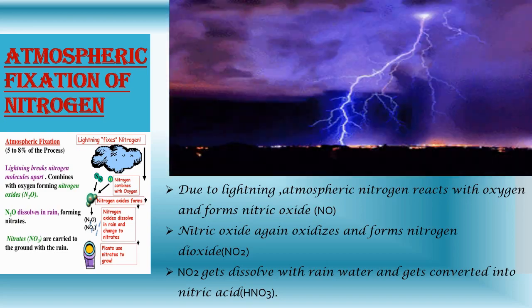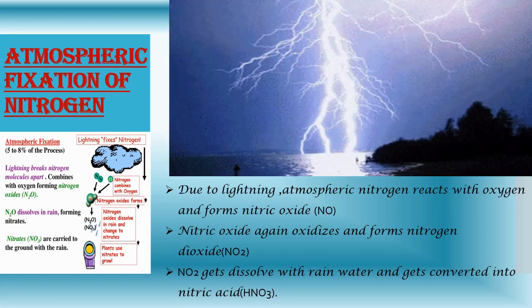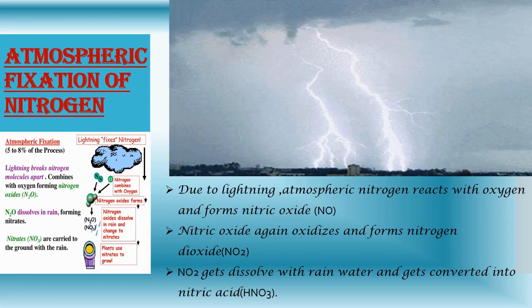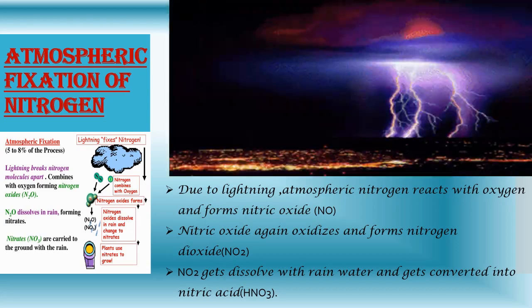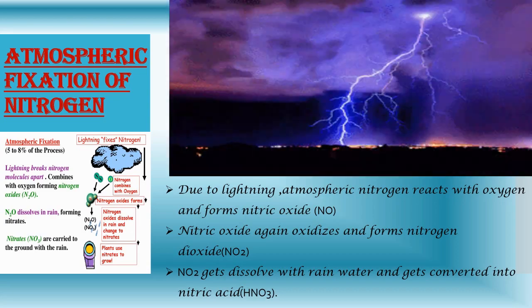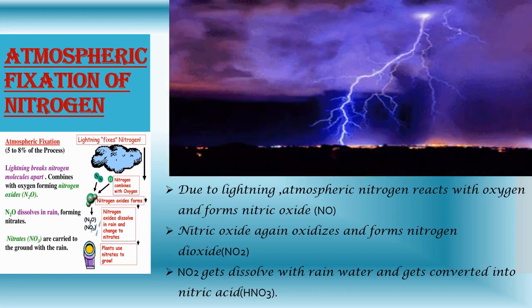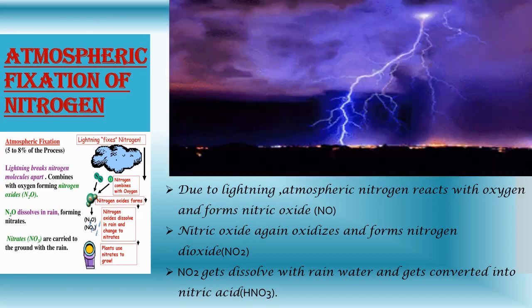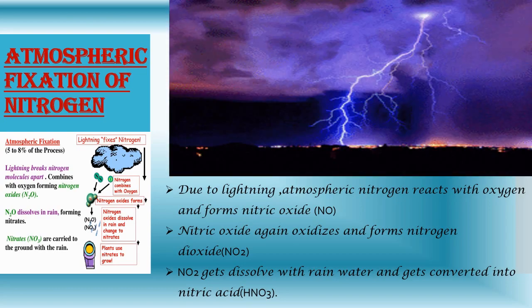Nitrogen dioxide dissolves in rainwater and gets converted into nitric acid, with the formula HNO₃. This nitric acid gets added to the soil along with rainwater and is later absorbed by plants along with the water.